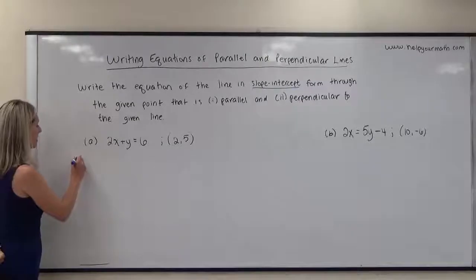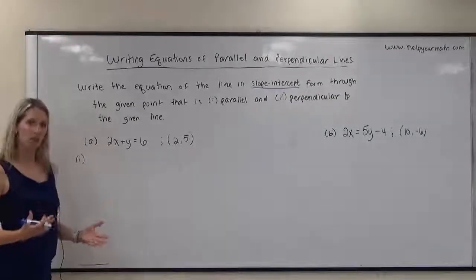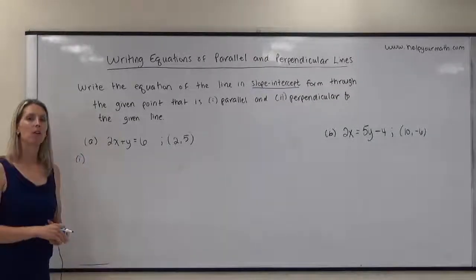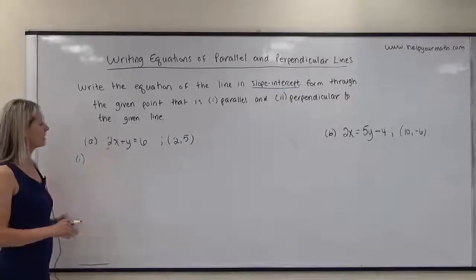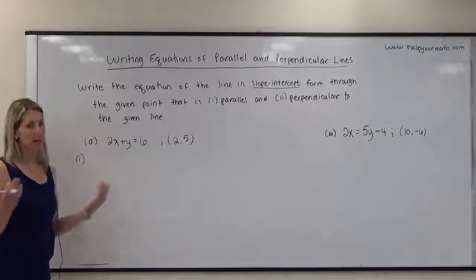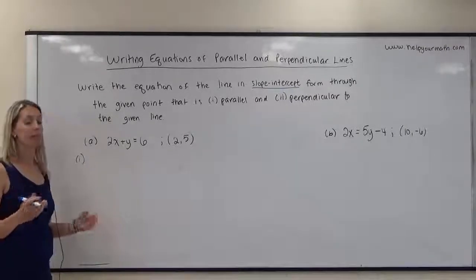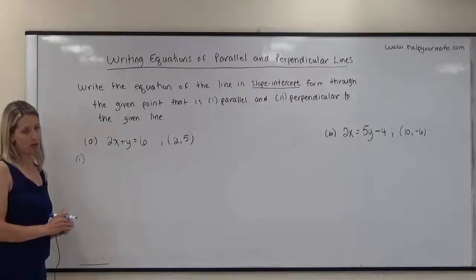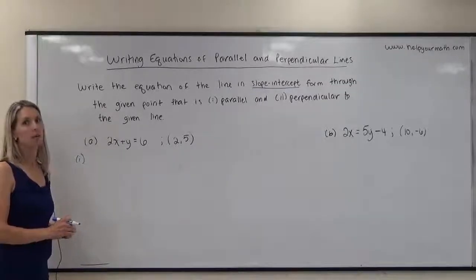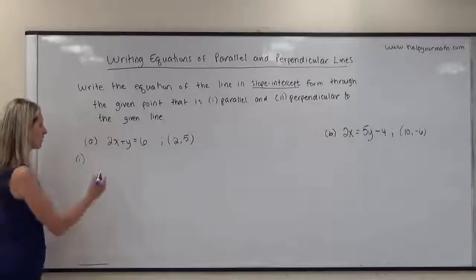Let's start with the parallel line. What do we remember about parallel lines? Parallel lines have the same slope. When the equation is written in standard form, it's not immediately obvious what the slope is. So the first thing we're going to do is rewrite the given equation in slope-intercept form.